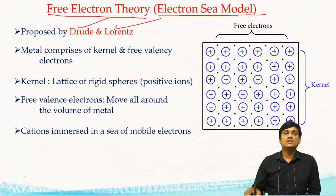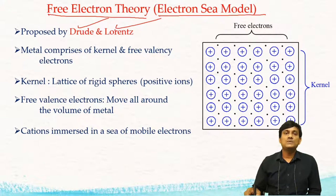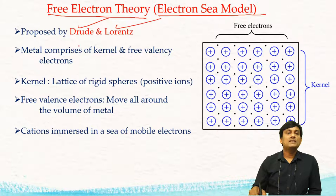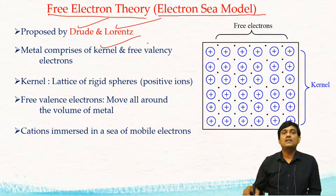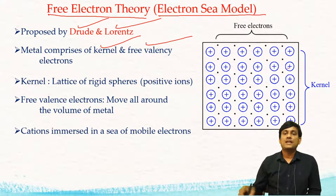We know that metals are electropositive elements — they can readily lose electrons and they can form positively charged ions. According to this theory, metal comprises of kernel and free valency electrons. Kernel is a lattice of rigid space of positively charged ions.